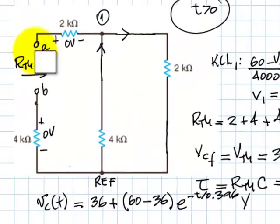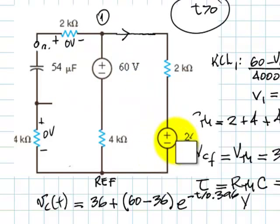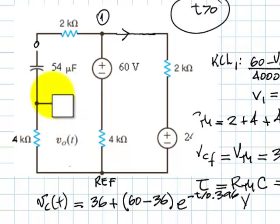Now we can bring back our capacitor and the rest of the circuit. The question remains: what we want is the voltage in this 4 kilo-ohm resistor, this voltage here. What is that voltage? That is what we need to find.